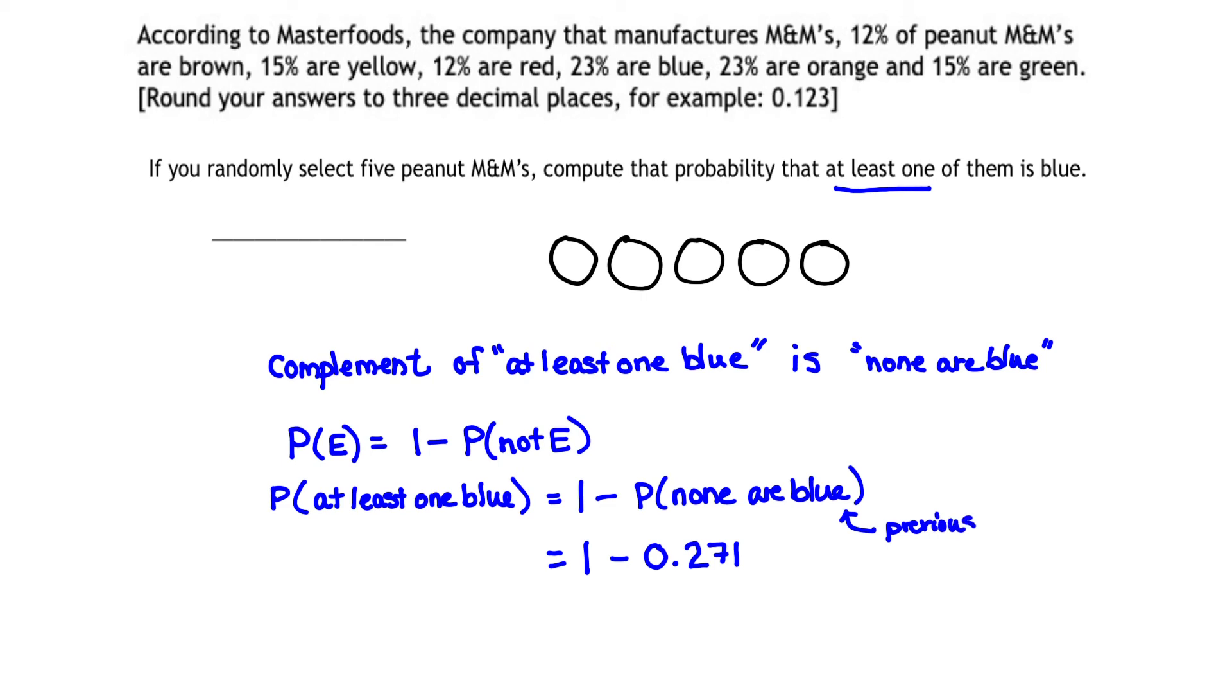We calculated the probability that none of five M&Ms would be blue. That probability was 0.271. And so the probability that at least one is blue is taking one minus 0.271, and that gives us the probability of 0.729.